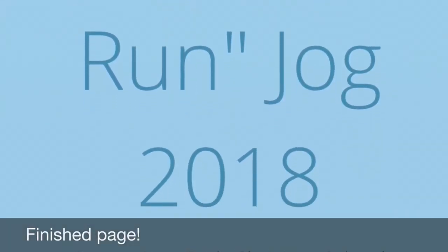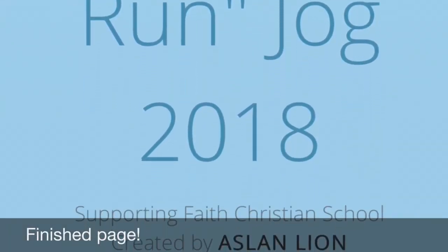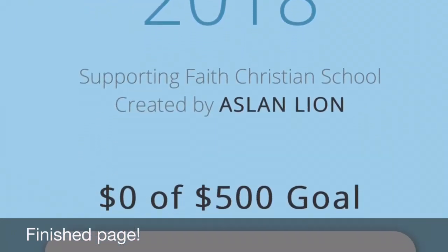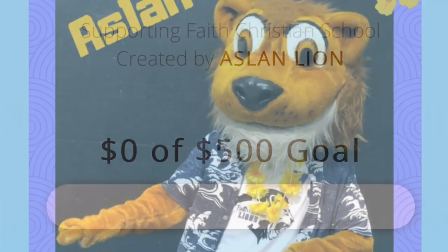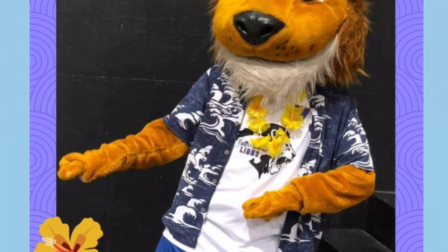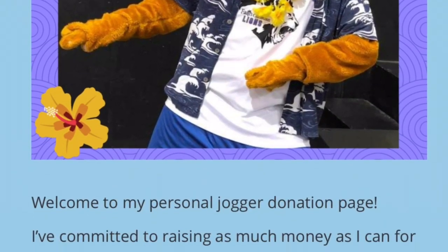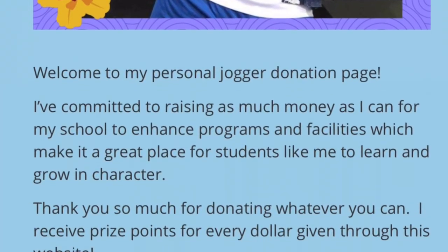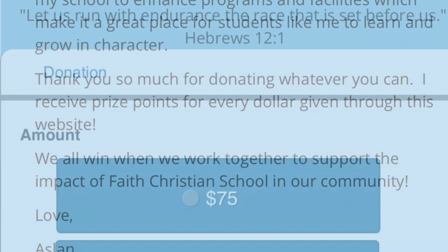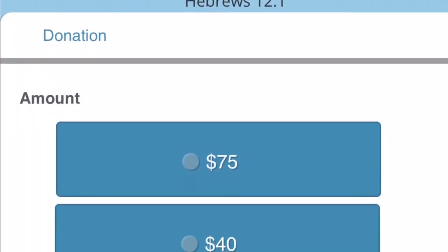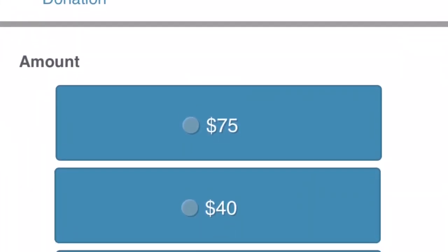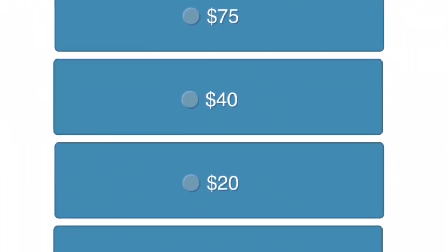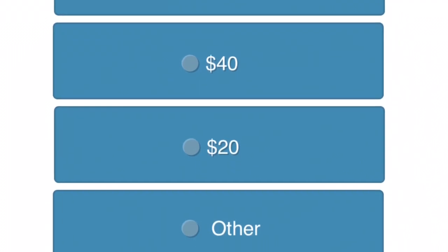Here is what a completed page looks like — here's Aslan's page. He has his $500 goal, his adorable photo that he uploaded, and his personal message which he signed at the bottom. Aslan is set and ready to receive online donations and start stacking up those jog points.